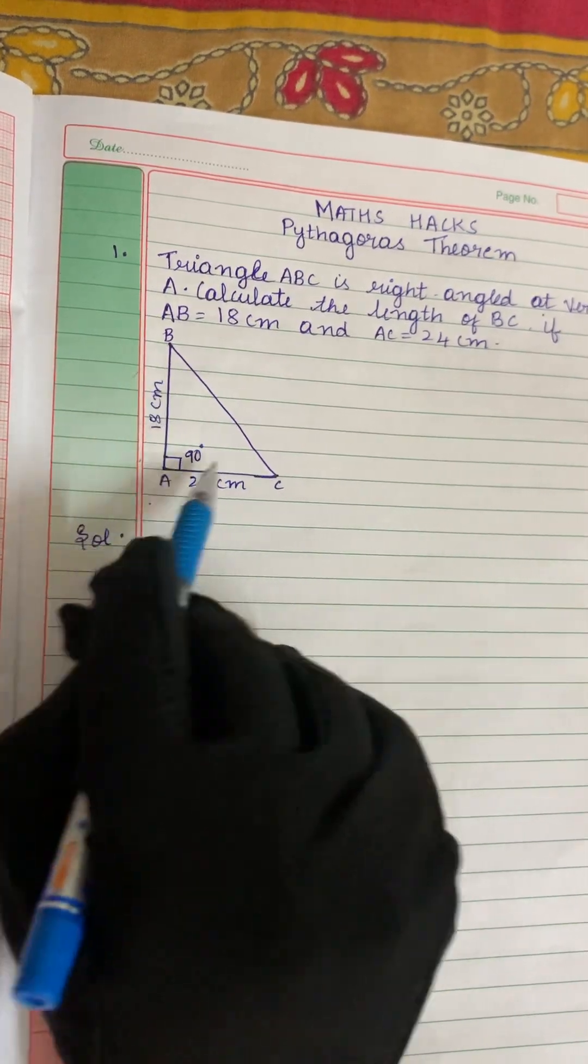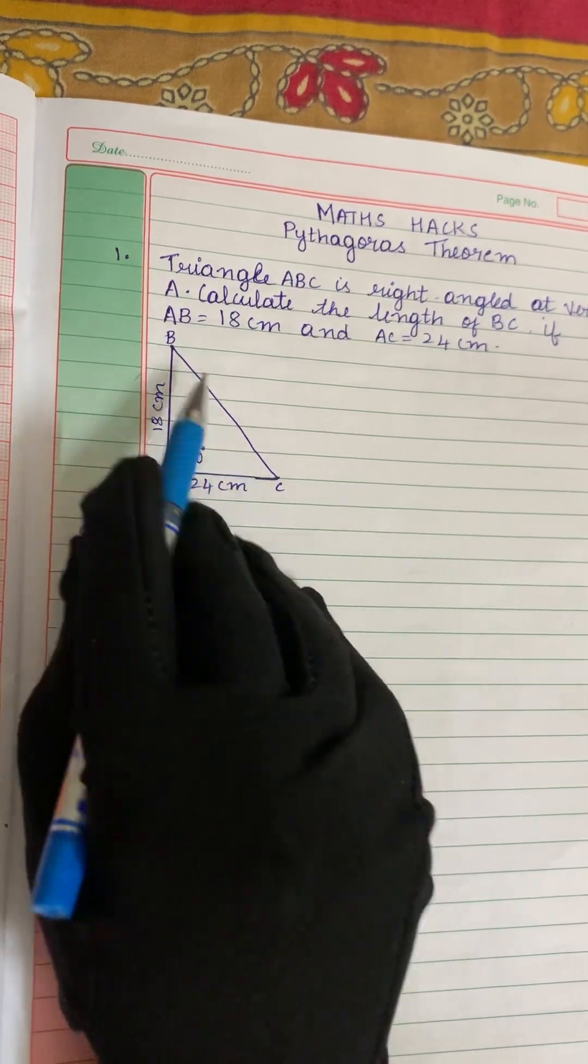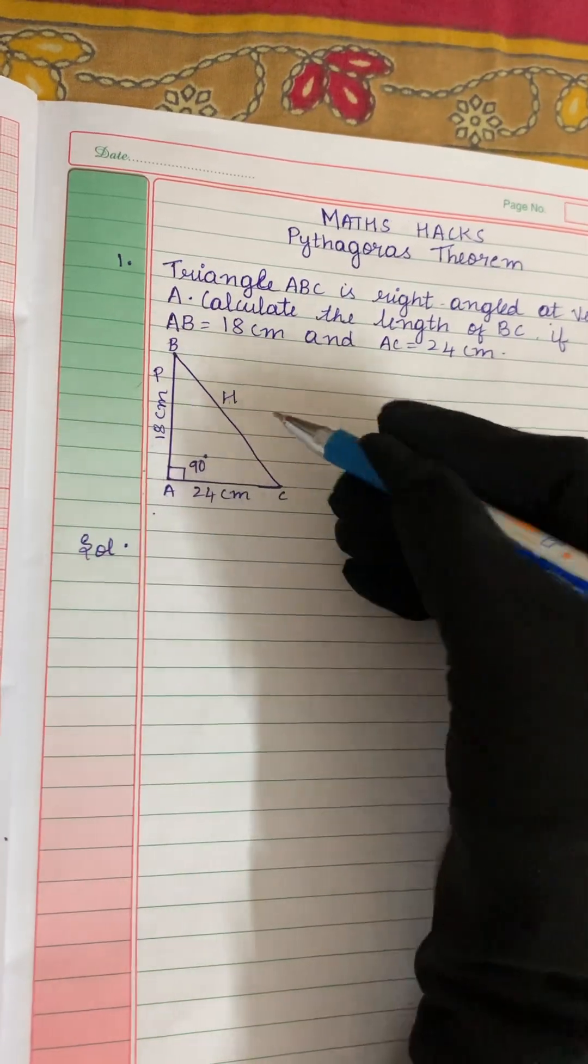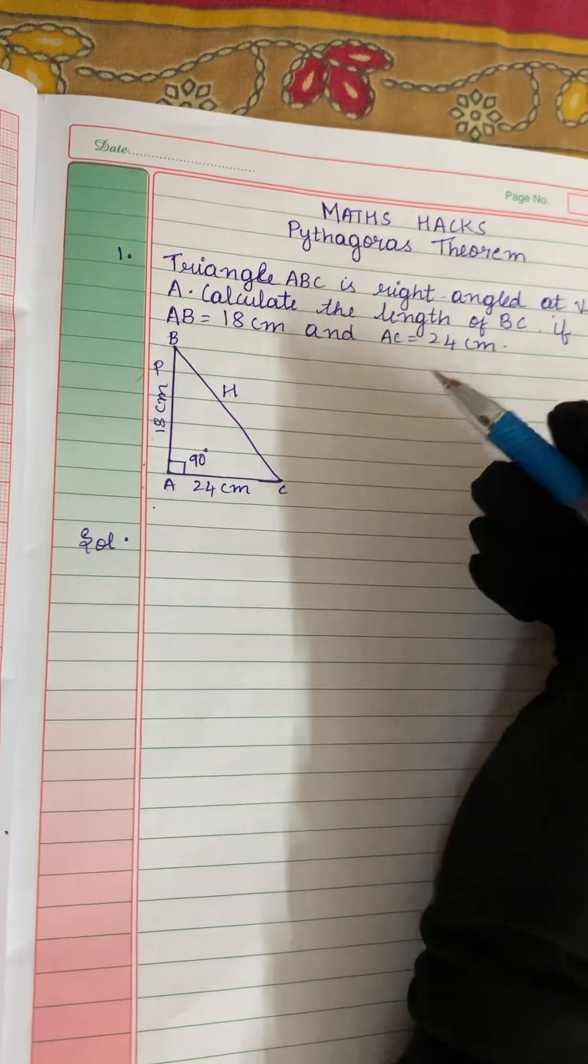So the longest side over here is BC. So this is hypotenuse and this is perpendicular. BA is perpendicular, BC is hypotenuse.